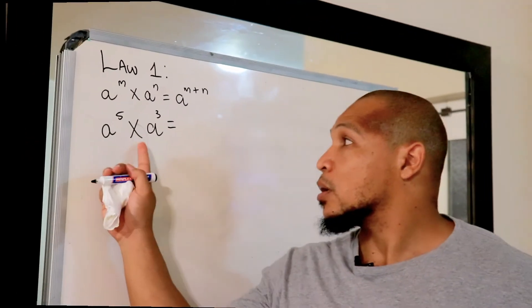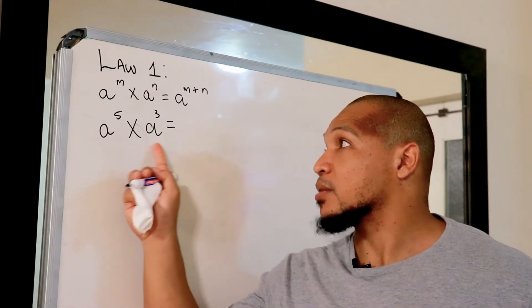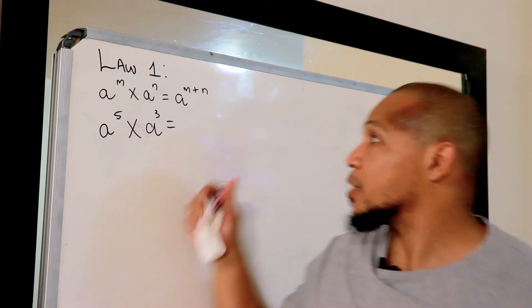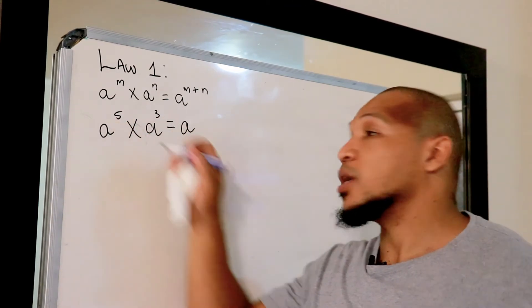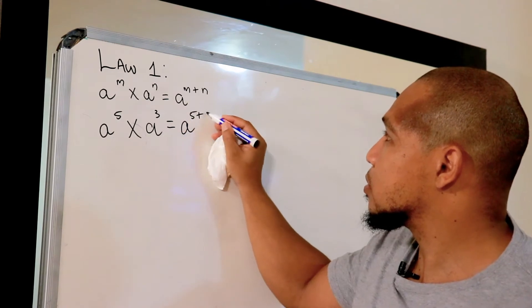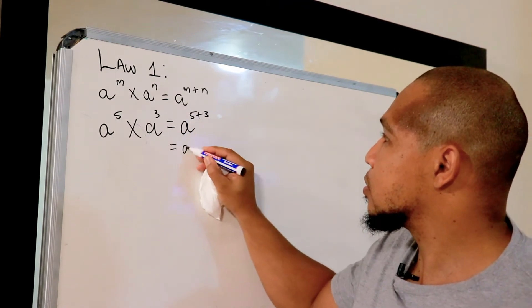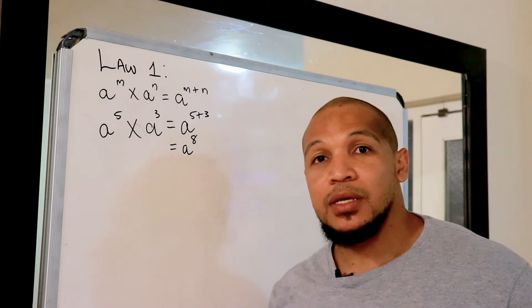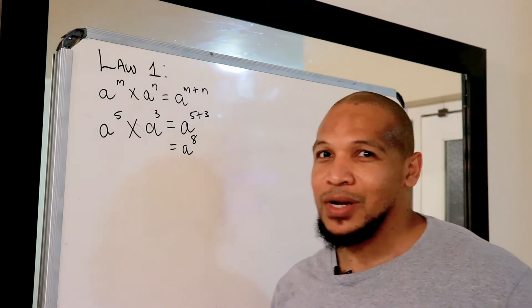Let's have an example. We have a base 'a' which is the same, so we write our base and then we add the exponents. Our answer will be a to the power of it. That's law number one.